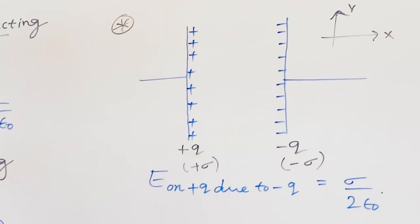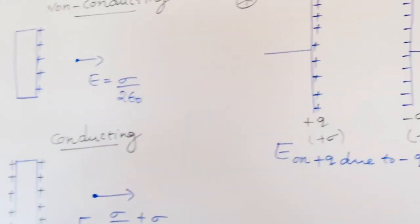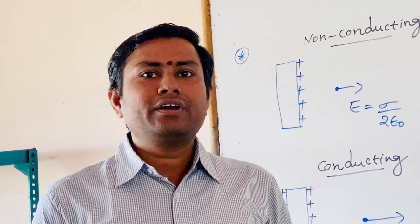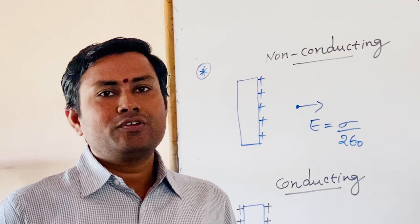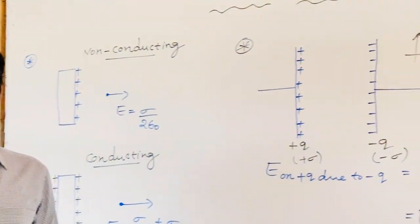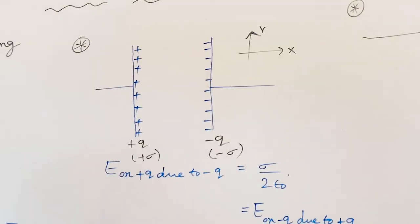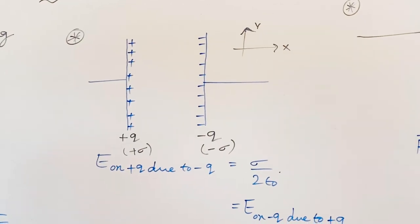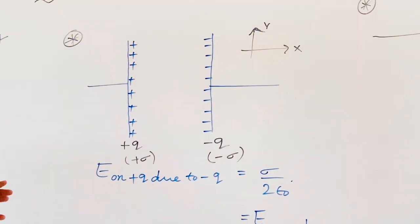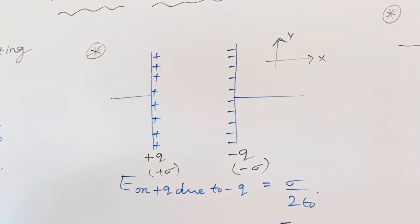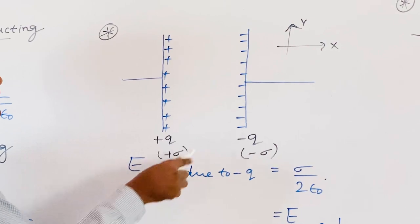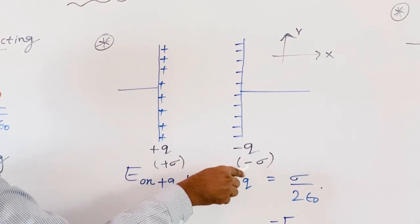Now come to the topic. We are concentrating on a parallel plate capacitor that is fully charged. To charge it, connect it with a battery. The capacitor charges until the potential difference across the plates equals the EMF of the battery. Once fully charged, remove the battery. The positive plate has surface charge density plus sigma, and the negative plate has surface charge density minus sigma.